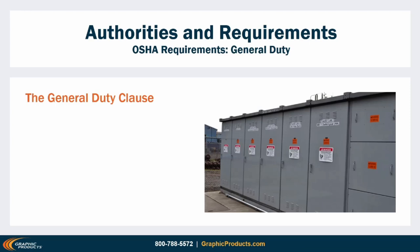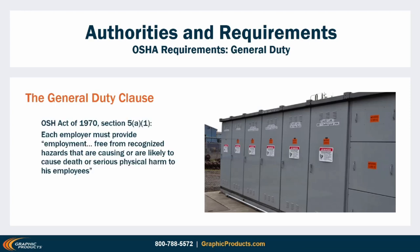Finally, there's what OSHA calls the General Duty Clause — Section 5 of the Occupational Safety and Health Act. The General Duty Clause says that employers have a general duty to provide a safe workplace where risks have been reduced so that hazards are not likely to cause serious injury. It's a guiding principle, and it brings us back to the core reasoning behind arc flash labels: it's all in the interests of safety.